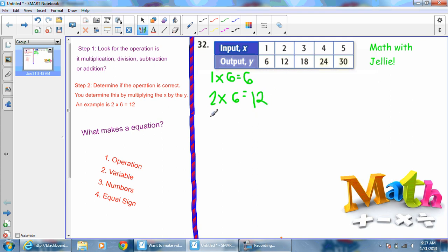I know that 6 times 3 is 18. So I can determine that all of these are correct.